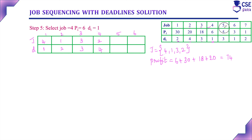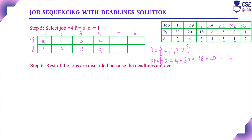Now consider the next job, job number 5. Its deadline is 3, but the third unit of time already has job number 3 assigned, so the deadline is already over and we cannot consider this job. Next, job number 6 — its deadline is 1, which is also already over, so we neglect this job. Job number 7 has a deadline of 2, which is also already over. The rest of the jobs must be discarded because their deadlines have passed.